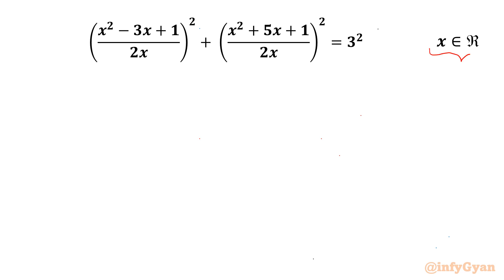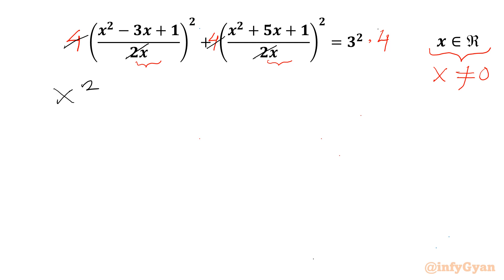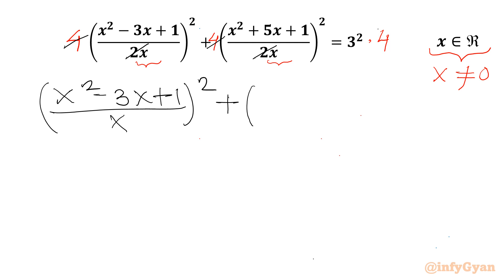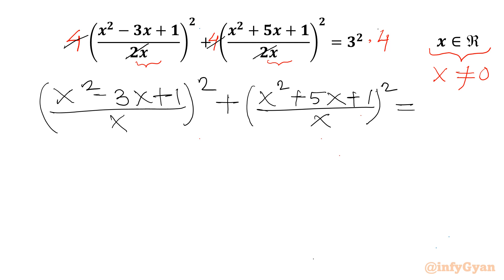We have to find out real solutions only. Let's get started by writing that our denominator cannot be 0, so x cannot be 0. Now I will multiply our equation by 4 on both sides. We can cancel 4 with the denominator 2, so our equation will become (x² - 3x + 1)/x² + (x² + 5x + 1)/x² and the right-hand side is 9 times 4, so 36.